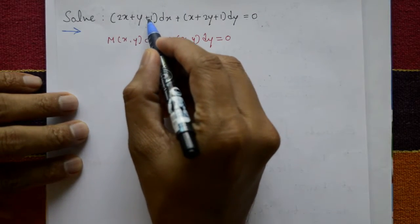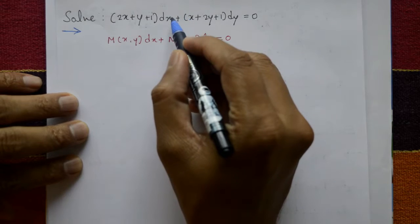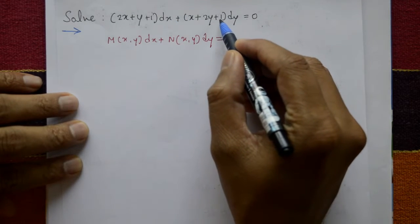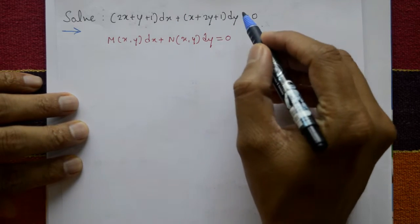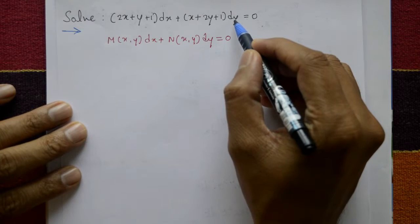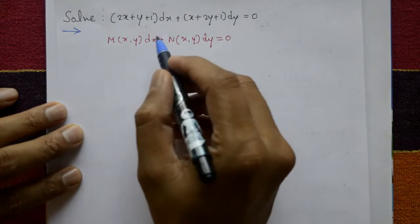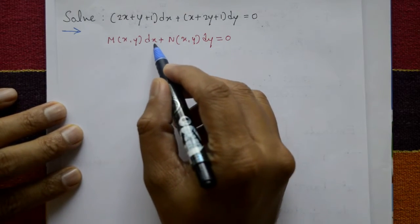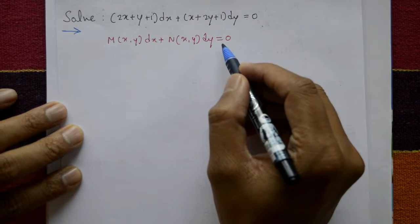Solve (2x + y + 1)dx + (x + 2y + 1)dy = 0. Now this form is like M(x,y)dx + N(x,y)dy = 0.